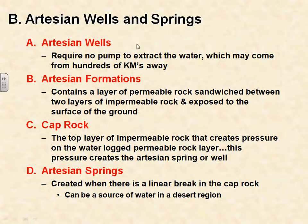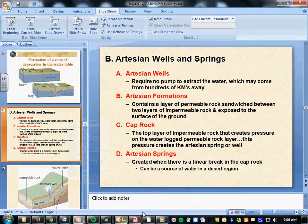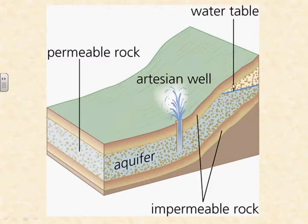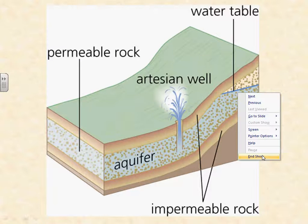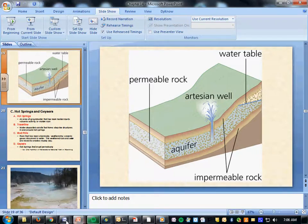An artesian well is a well where water comes out of the ground without pumping, because pressure has built up. We have two impermeable rock layers sandwiched around a permeable rock layer in the middle with water flowing through it. It's no different than how water comes out of a water tower — the pressure builds up and pushes the water out. We call this an artesian formation.